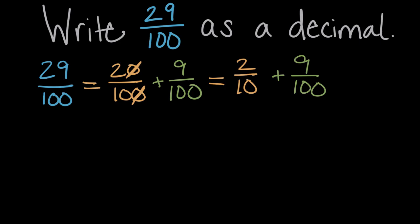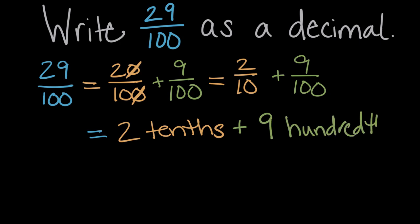So what we've shown here is that 29 hundredths is equal to two tenths plus nine hundredths. Here we have two tenths, which matches two tenths, and nine hundredths, like our nine hundredths right there. And so we can take those and think about place value.